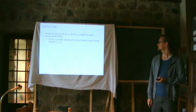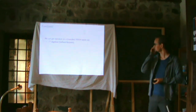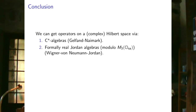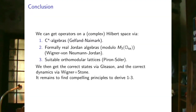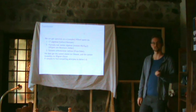In conclusion, you can arrive at operators in complex Hilbert space via C*-algebras, via formally real Jordan algebras, or — the topic I skipped — via orthomodular lattices. Given complex Hilbert spaces, Gleason's theorem gives the correct states, and Wigner plus Stone gives the correct dynamics. What remains is to find compelling reasons why we should prefer one of these three structures. That would give us quantum theory derived from first principles. Thank you.